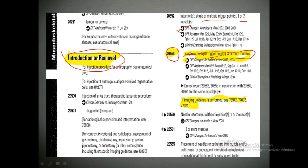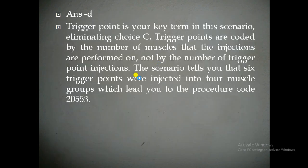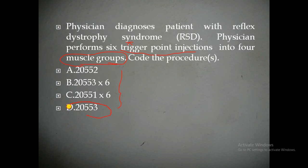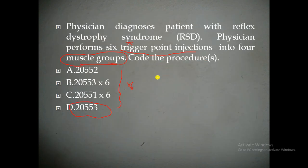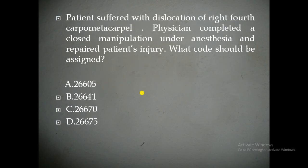20553 is the answer. We have to select the CPT code based on how many muscle groups the physician is giving the injection, not based on the trigger points. 20553 is coded only once — there is no need to code x6. Why? Because the code itself covers 3 or more muscles. Whether it is 4, 5, 6, 7, or 8 muscles, it can be any number — only one CPT code is needed. That is 20553.